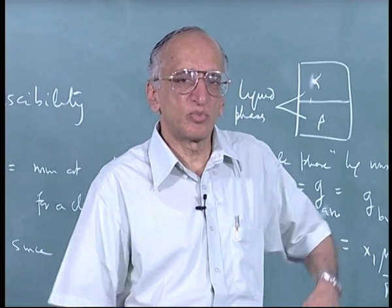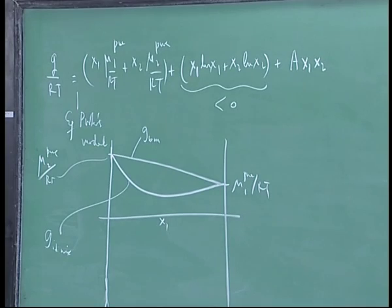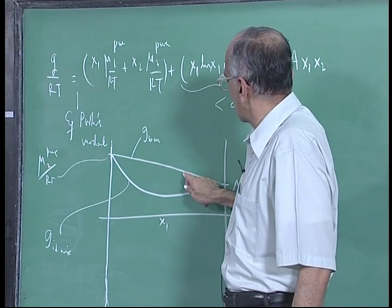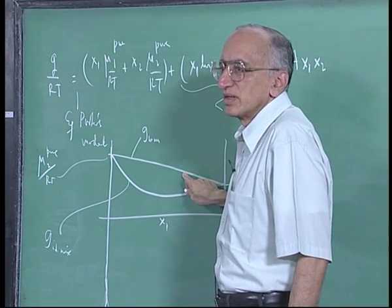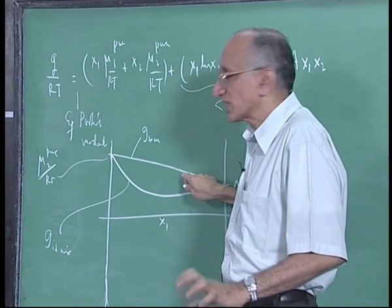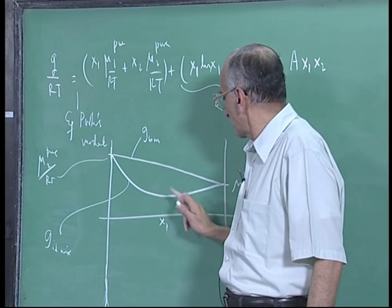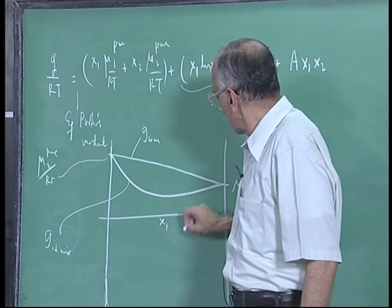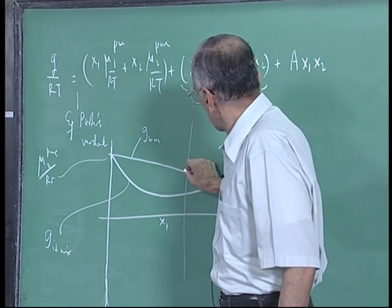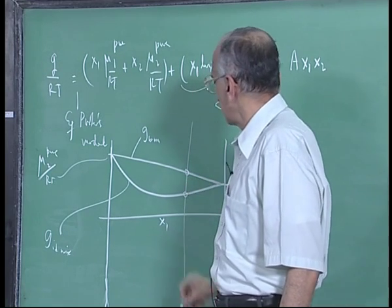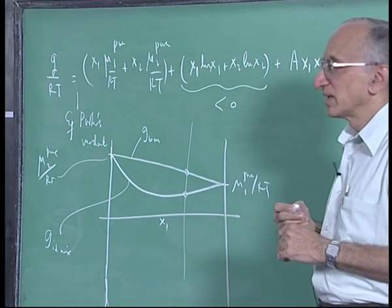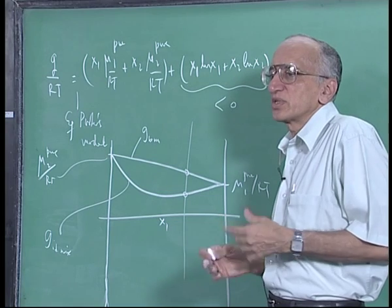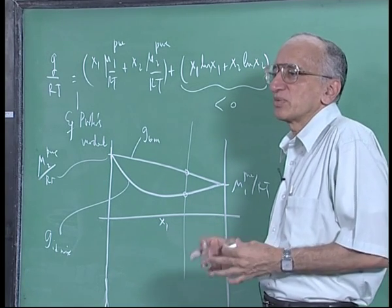Ideal mixing means all components are always miscible in all proportions, because at any given T and P, fixing the composition, the free energy of the mixture is lower than that of the separate components. If you keep them together and allow them to mix, they will mix because the mixture has a lower G. According to thermodynamics, the system comes to equilibrium at the lowest possible G, so the equilibrium state is always that of a mixture.